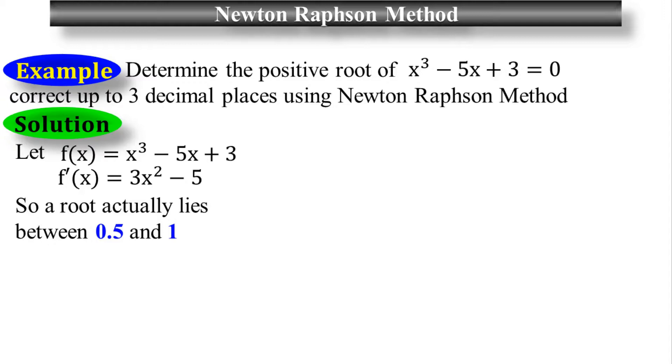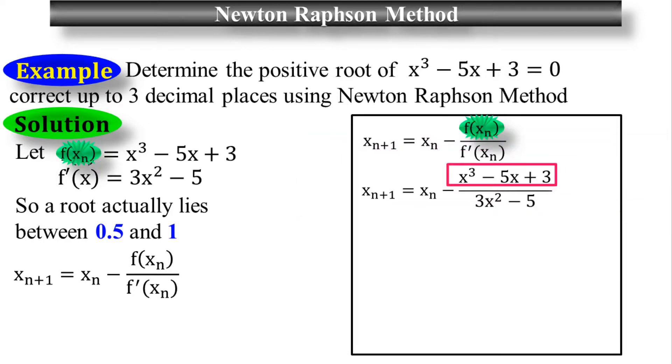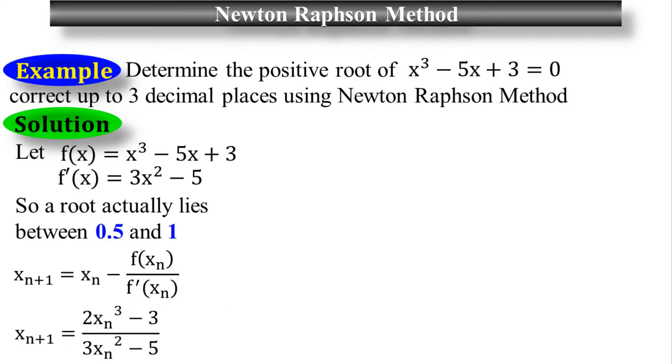So I will proceed further now from the equation of the Newton-Raphson method. Let me simplify this equation. The value of f of x sub n is x cube minus 5x plus 3. f prime of x sub n is its derivative, which is 3x square minus 5. Take its LCM to get the final value: x sub n plus 1 equals 2x sub n cubed minus 3, over 3x sub n squared minus 5. This is my new equation of the Newton-Raphson method.